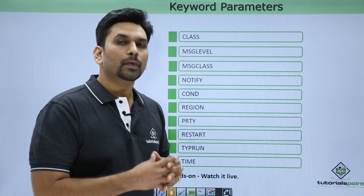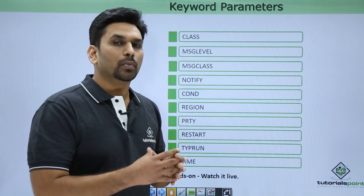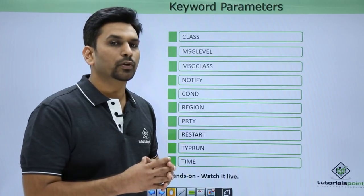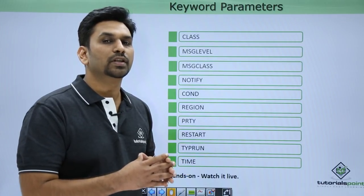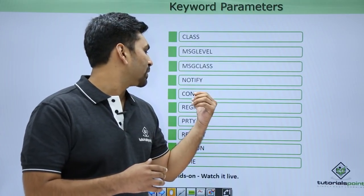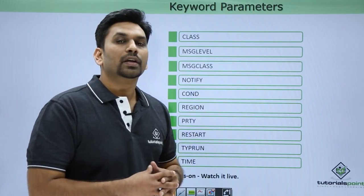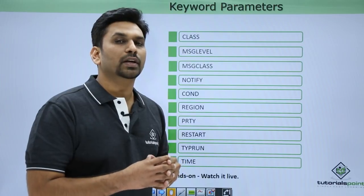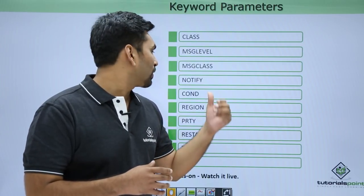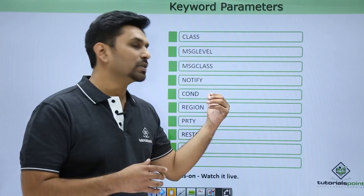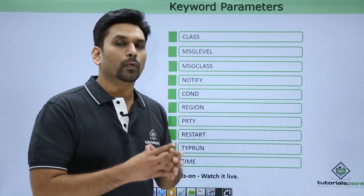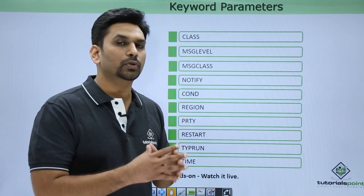Then we have NOTIFY, which is used to notify the user whether the job has been executed successfully or not. If the condition code is zero, the job is successful. We also have the CONDITION parameter, which checks a condition and decides whether a step should be executed or not — we will cover more about this in coming videos.